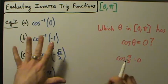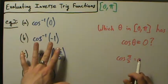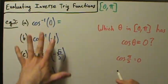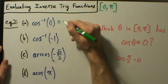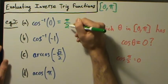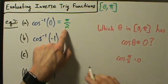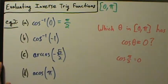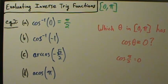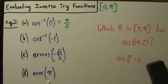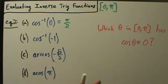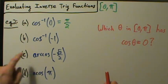When you evaluate inverse trig functions with nice numbers without a calculator, it really just comes down to knowing the unit circle and remembering the range of the inverse trig function you're looking at. The inverse cosine of 0 is pi over 2 because cosine of pi over 2 is 0, and pi over 2 is in the range of inverse cosine. It's going backwards from how we usually do trig.